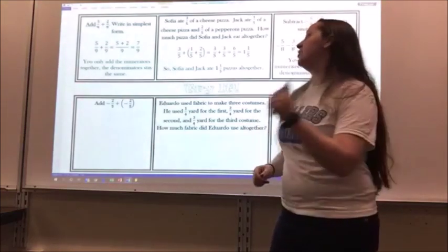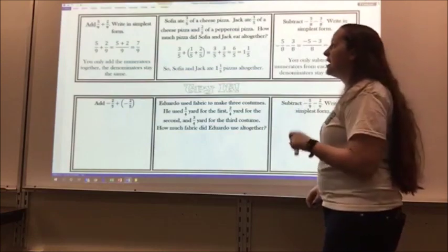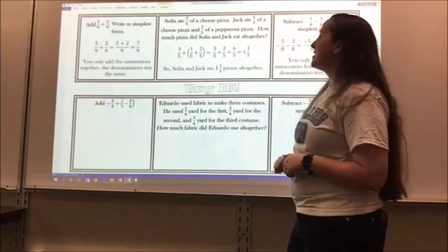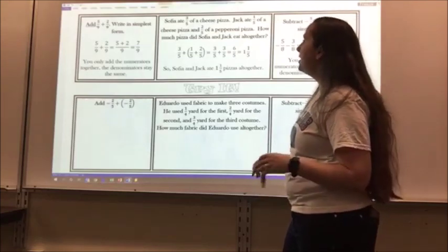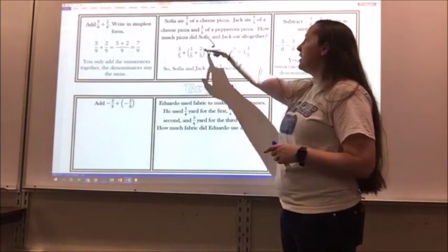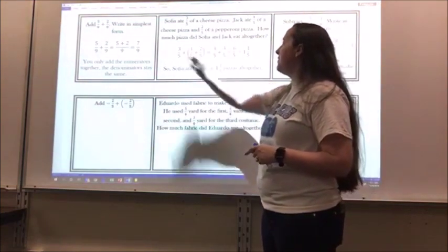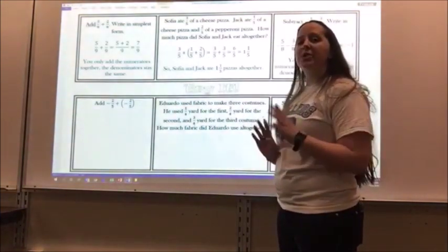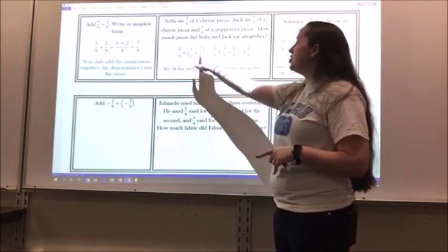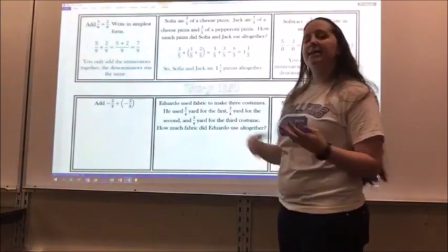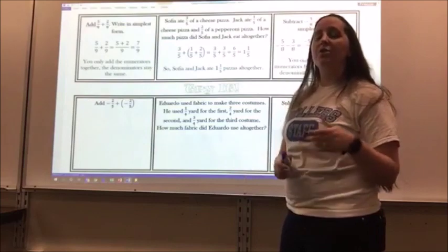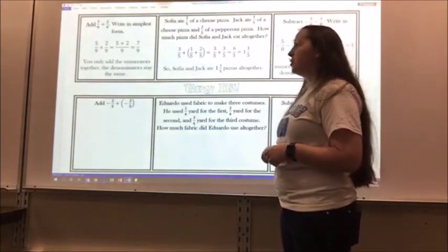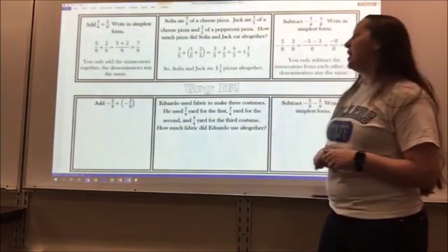Sophia ate 3 fifths of a cheese pizza. Jack ate 1 fifth of a cheese pizza and 2 fifths of a pepperoni pizza. How much pizza did Sophia and Jack eat together? So Jack ate 1 fifth and 2 fifths, so I add those together. And Sophia ate 3 fifths. All of my denominators are the same, they're all 5, so I just add them together. 3 plus 1 plus 2 gives me 6 fifths. I can simplify into a mixed number. 5 goes into 6 one time with 1 left over, 1 and 1 fifth. So Sophia and Jack ate 1 and 1 fifth pizzas together.